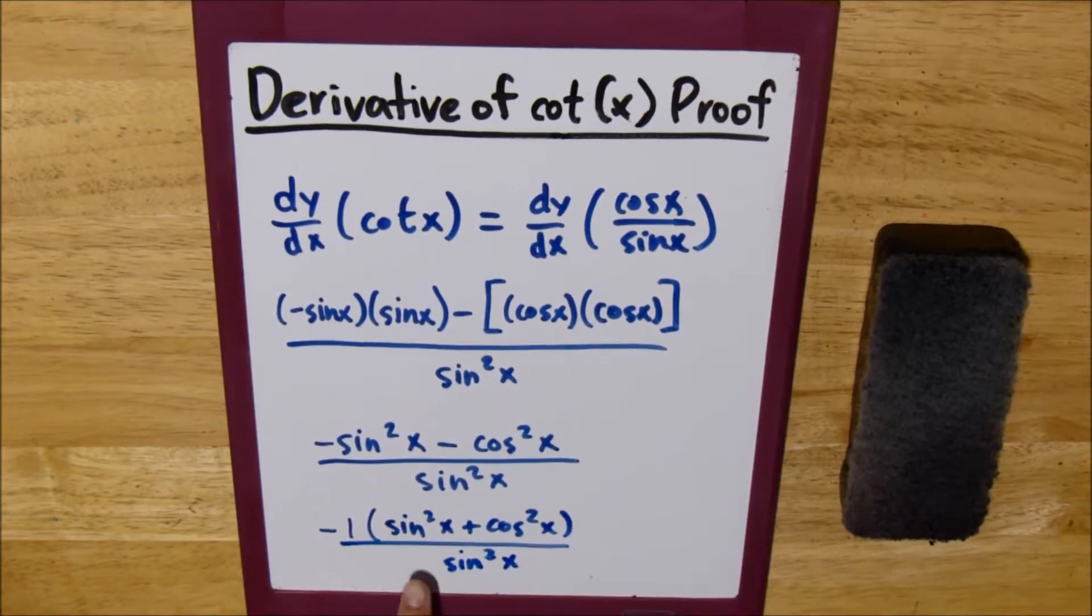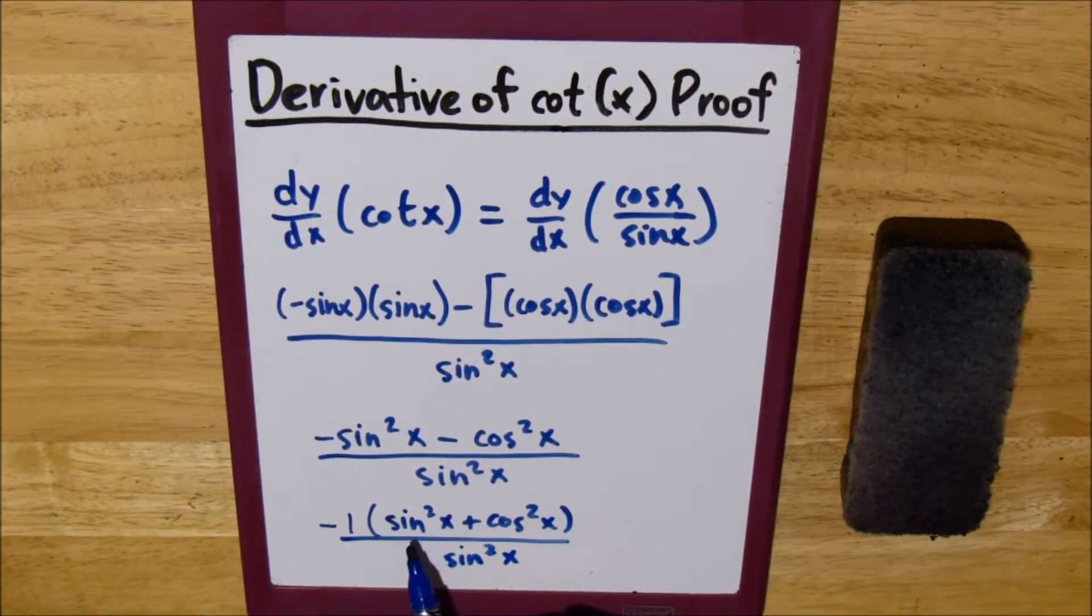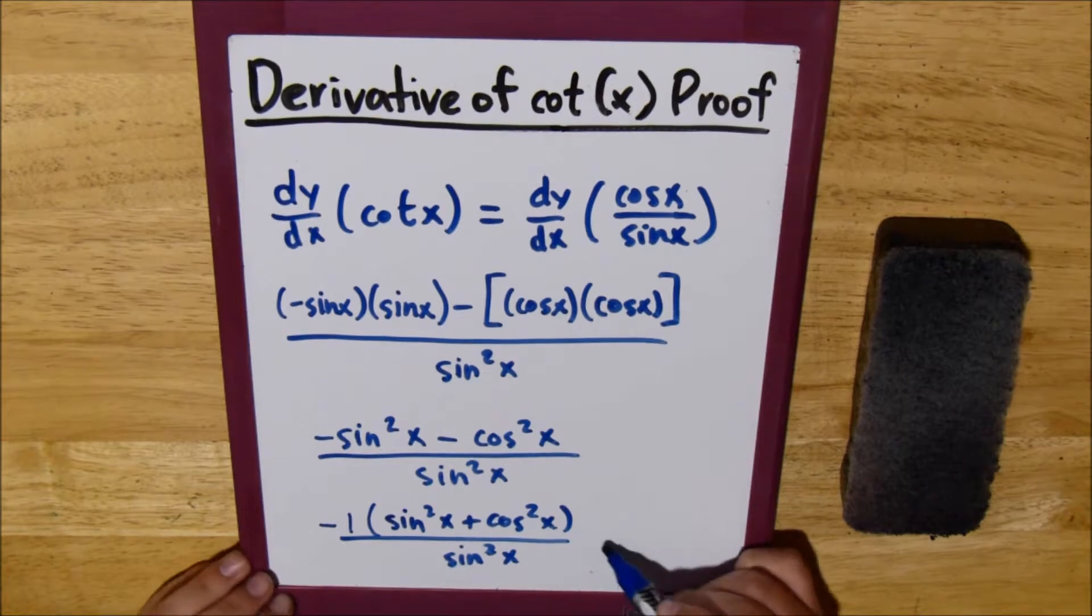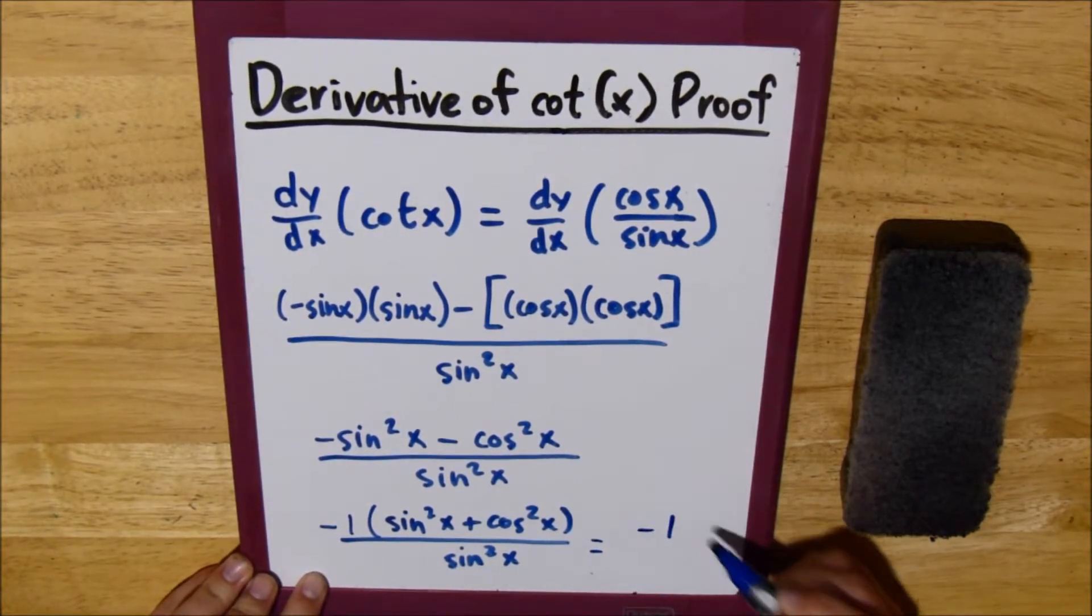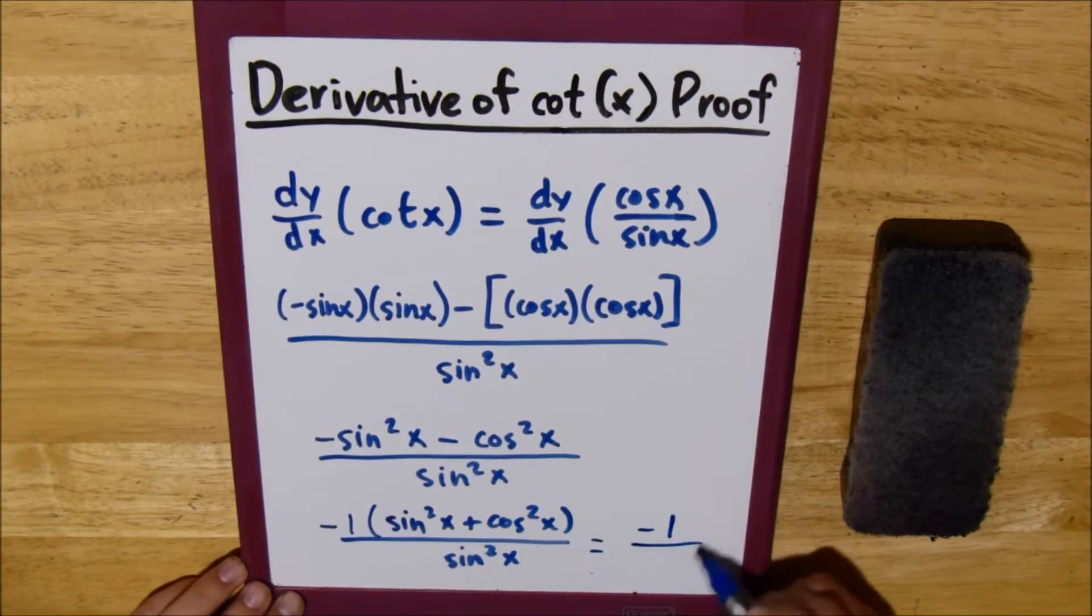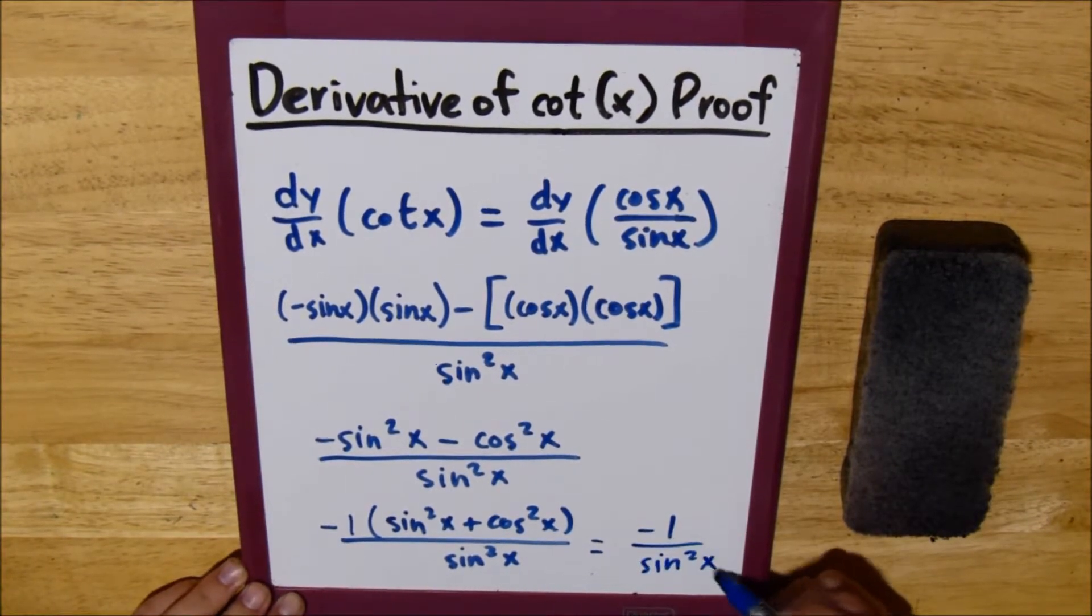Now we know that sine squared x plus cosine squared x is equivalent to 1, just one of those sine and cosine properties. So we can write this as negative 1 times 1, which is just negative 1 over sine squared x.